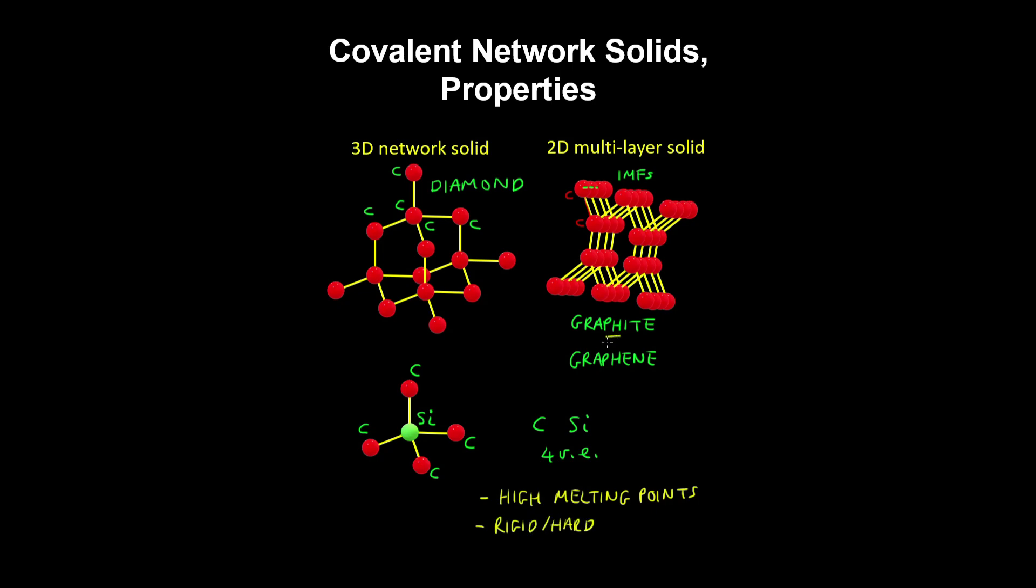However graphite is soft because you have weak intermolecular forces between the layers, and they can slide past each other easily. And as you can imagine, the electrons are not free to move around in covalent network solids, which also makes them poor conductors.